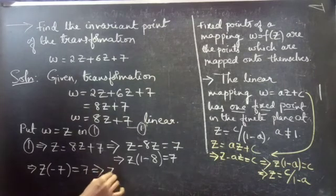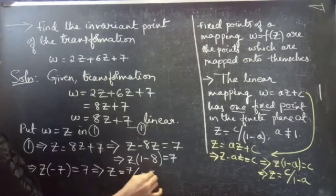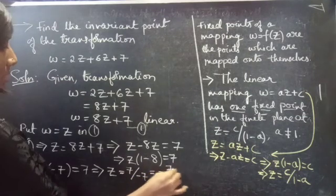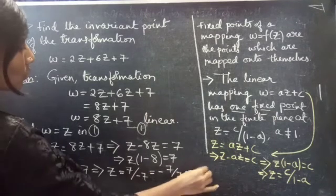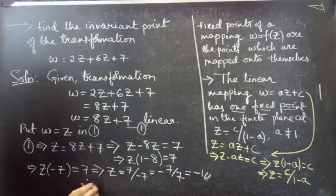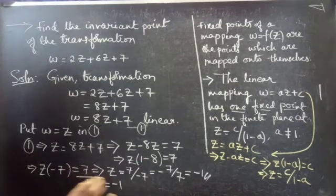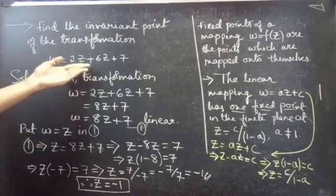So we get Z equals 7 divided by negative 7, which equals negative 1. Therefore Z equals minus 1 is a fixed point for the given transformation.